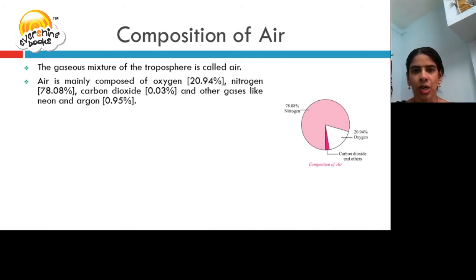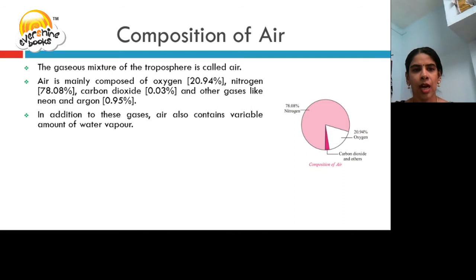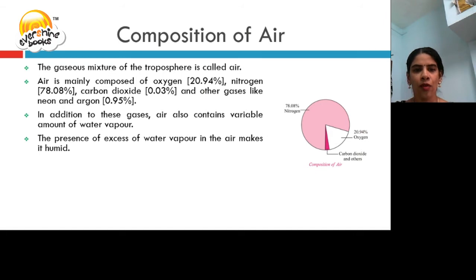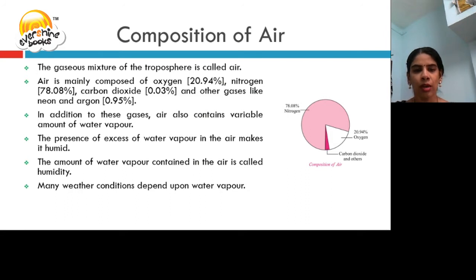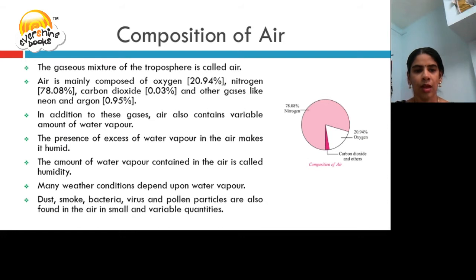The diagram shows the pie chart of the composition of air. In addition to these gases, air also contains a variable amount of water vapor. The presence of excess water vapor in the air makes it humid. The amount of water vapor contained in the air is called humidity. Many weather conditions depend on water vapor. Dust, smoke, bacteria, virus, and pollen particles are also found in the air in very small and variable quantities.